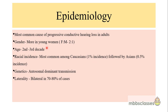It affects mainly young women; females are two times more commonly affected than males. Regarding racial incidence, it is more common among Caucasians, followed by Asians. In 50% of patients they give a positive family history, and genetic studies reveal autosomal dominant transmission. The disease involves both ears in 70 to 80% of cases.